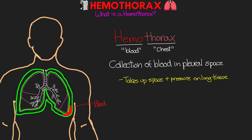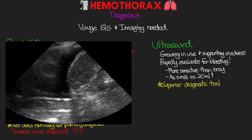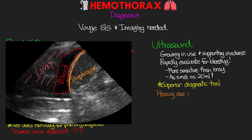Here's a quick example: the black section is the blood, resting on top of the diaphragm on the right, and the lung tissue is on the left. In trauma it's pretty often that we utilize the ultrasound, sometimes even before an x-ray, and it's being adopted in many places in different dyspnea protocols as well.